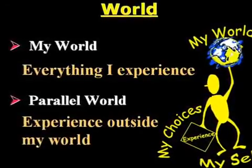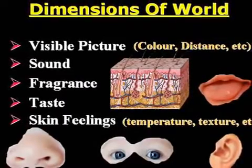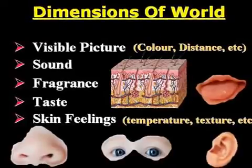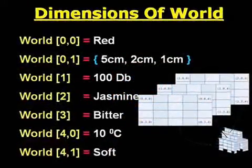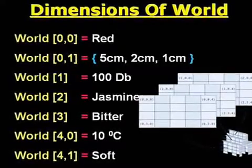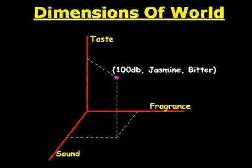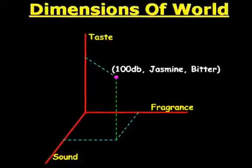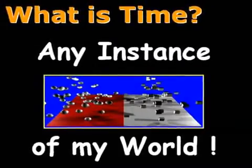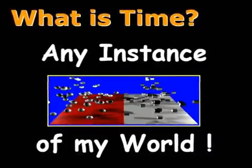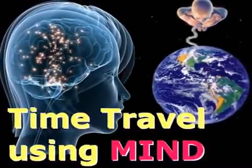Your world may be parallel to mine. The basic dimensions of my world are mutually exclusive to each other. My mind learned them and stored them as memory. An instance of my world dimensions is represented as an array, and an instance of the three dimensions of my world is depicted using Cartesian coordinates. According to this model, time is any instance of my world — my mind. Therefore, I can time travel even using the memories of my mind.